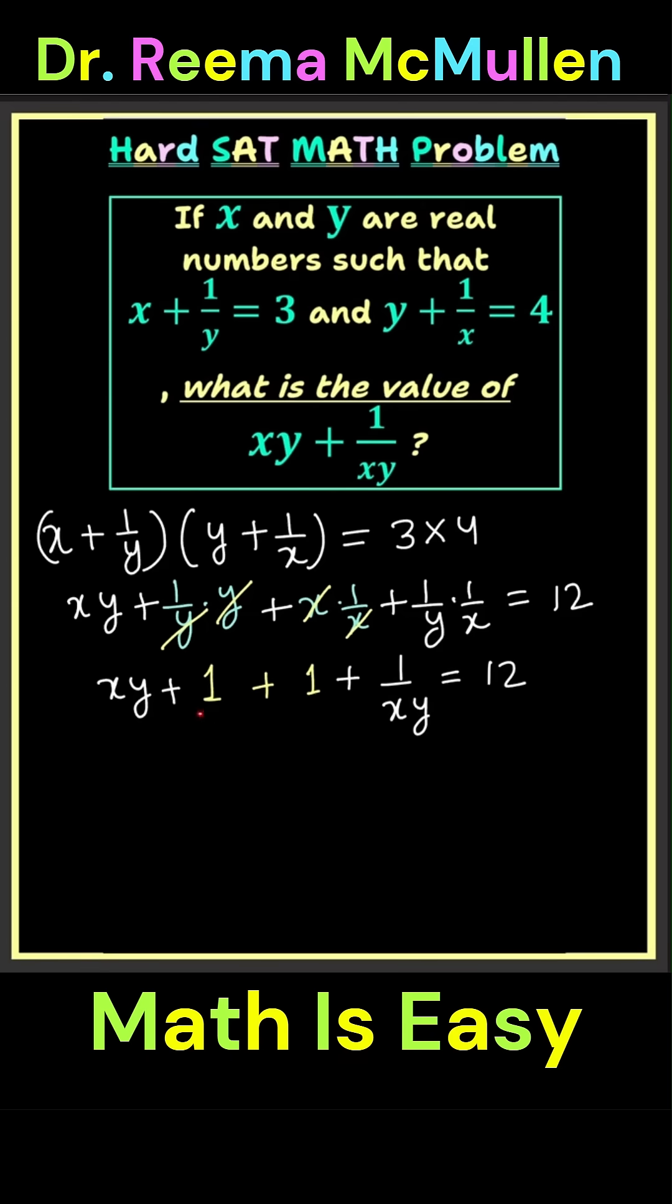Now this 1 plus 1 is 2. So to get rid of 2 from the left-hand side, subtract 2 from both sides of this equation. What does that give us?